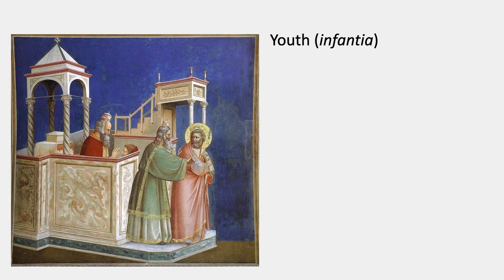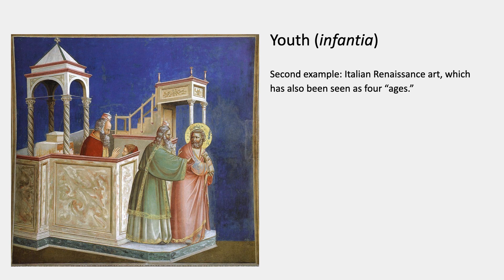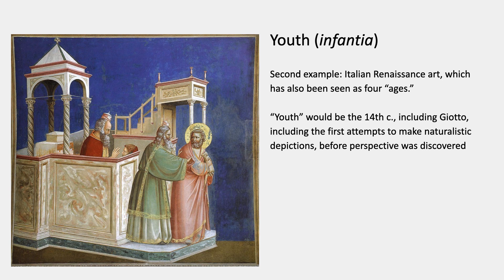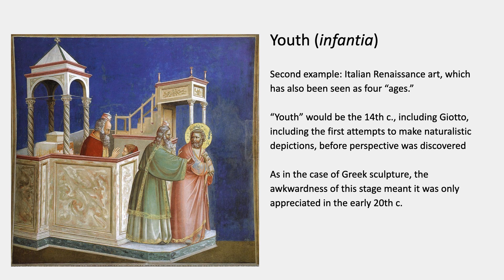The other principal example in art history of the four ages theory is Italian Renaissance art. Youth in this case would be the 14th century, including Giotto. That means the first attempts to make naturalistic depictions before perspective was discovered. It's been found that Giotto probably used models of architecture on a tabletop, because in other paintings you can sometimes see the same temples and gazebos turned from other angles. He might even have had models of figures. At any rate, there was no such thing as perspective back then. As in the case of Greek sculpture, the awkwardness of this stage meant that it was only appreciated in the early 20th century.